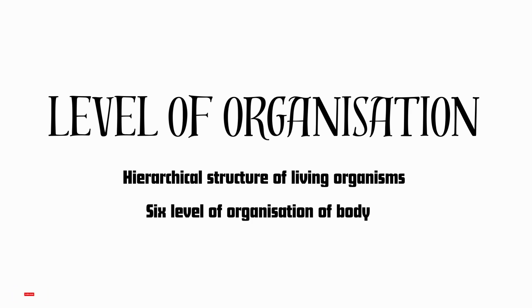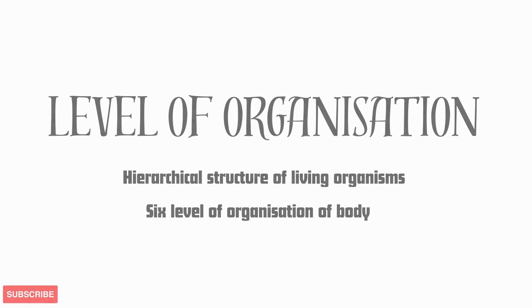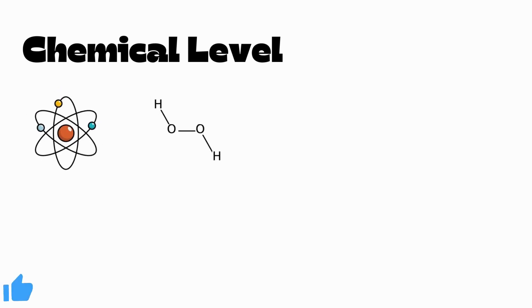The first level is the chemical level. Living organisms are composed of atoms and molecules such as hydrogen and oxygen, which combine to form molecules with three-dimensional structures. For example, the water molecule.